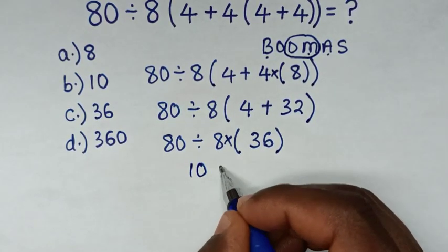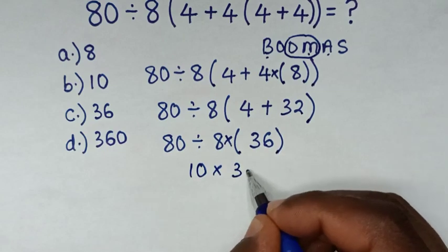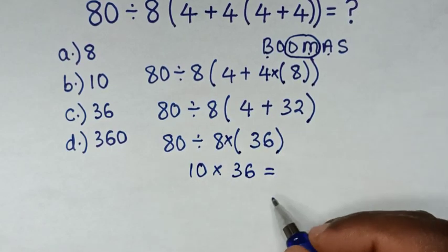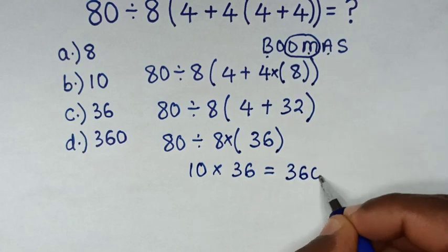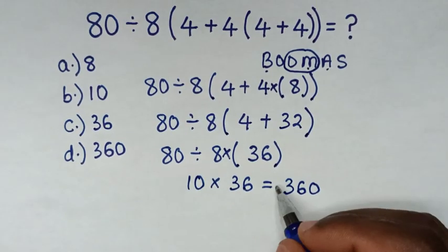Then times this 36, which is equal to 10 times 36 is 360. Therefore this is our final answer.